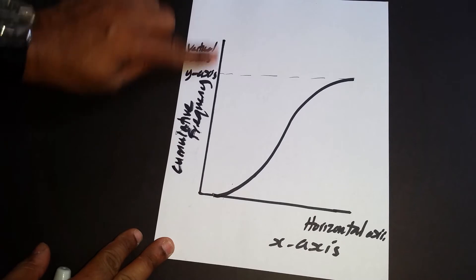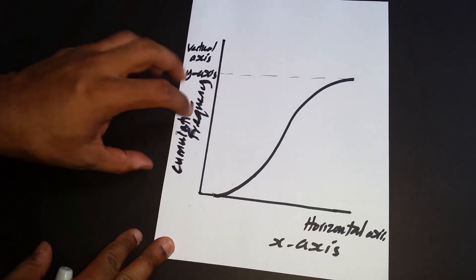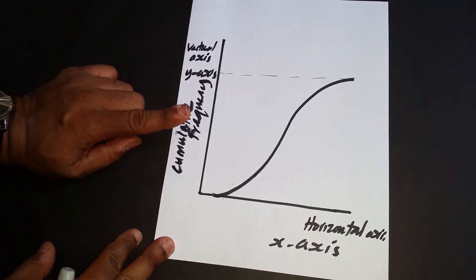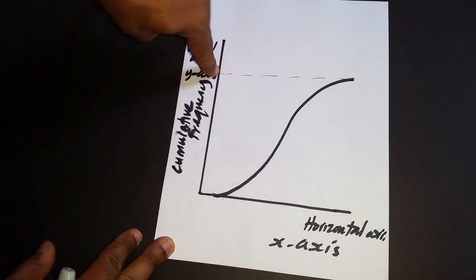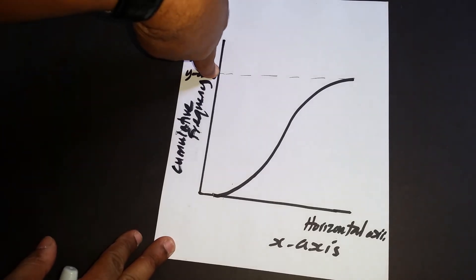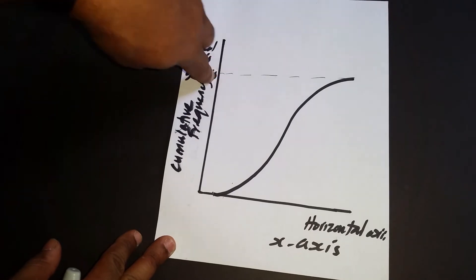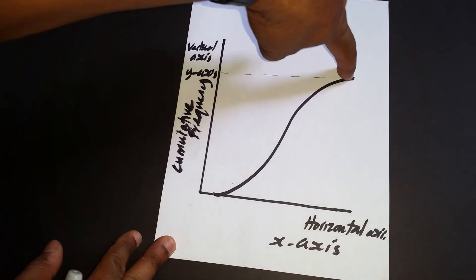The cumulative frequency column's final value is the same as the sum of the frequencies, which equals the total frequency. That value represents the top of the curve. So the total frequency equals the final value in the cumulative frequency column, and that should be at the top of the vertical axis.